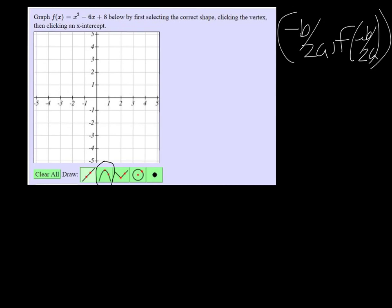And here our b is negative 6, so it's going to be positive 6. This is double negative over 2 times 1, which is 3.